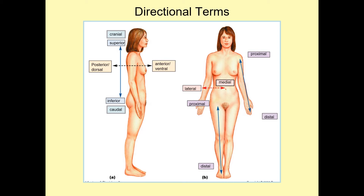Proximal refers to closer to the point of attachment, and distal refers to further away from the point of attachment. For instance, the shoulder is proximal to the elbow and the elbow is distal to the shoulder. Medial refers to closer to the midline of the body, and lateral refers to being further away from the midline. We also have deep and superficial — deep is closer to the core of the body, and superficial is closer to the surface.